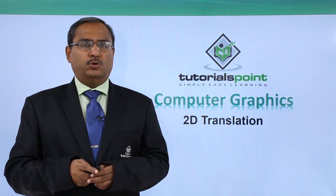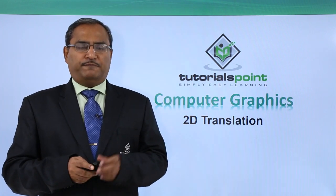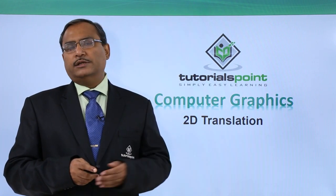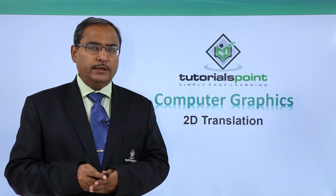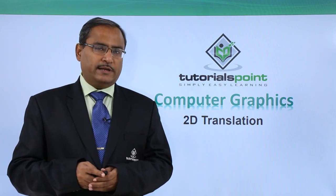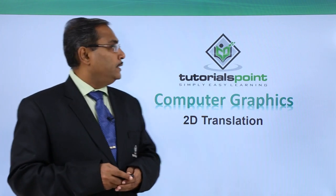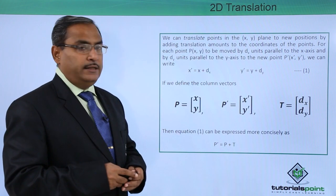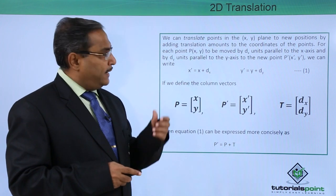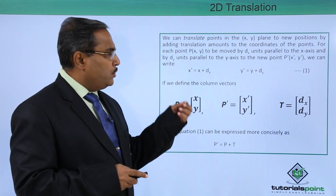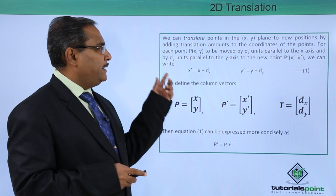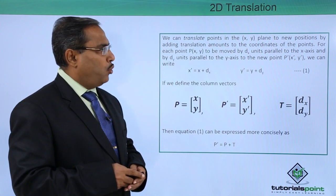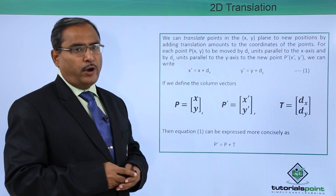2D translation. In the first operation under this 2D transformation, we are considering 2D translation. We can translate points in the x, y plane to new positions by adding the translation amounts to the coordinates of the point.